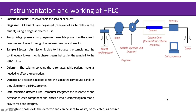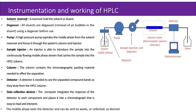Now let us see the instrumentation for HPLC. First is the solvent reservoir, where a reservoir holds the solvent or eluent. Second is the degasser — all eluents are degassed, that is, air bubbles are removed from the eluent using a degasser before use. Third is the pump — a high pressure pump aspirates the mobile phase from the solvent reservoir and forces it through the system's column and injector.